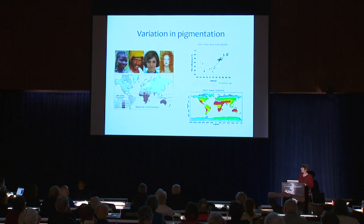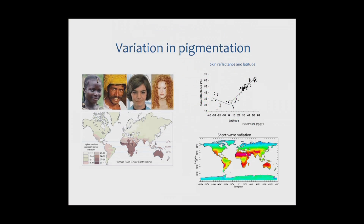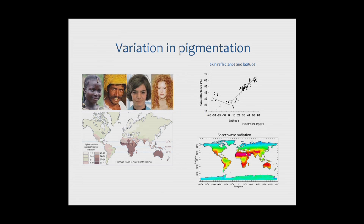Another phenotype with striking differences across ethnic groups and striking geographic patterns is pigmentation. We know that skin reflectance, a measure of pigmentation, is strongly correlated in worldwide populations with latitude or distance from the equator, suggesting that variation in pigmentation is adaptive with regard to different degrees of shortwave radiation. These are two cases where phenotypic variation appears to be a function of a particular environmental variable.